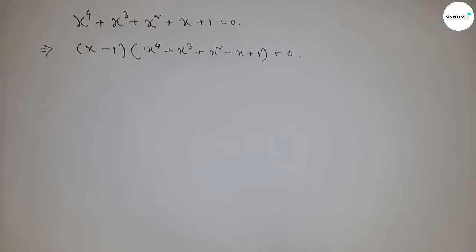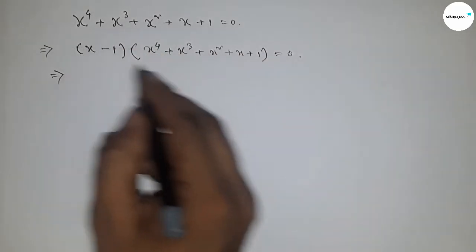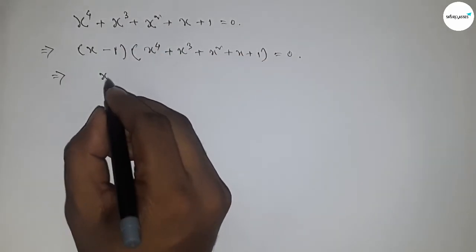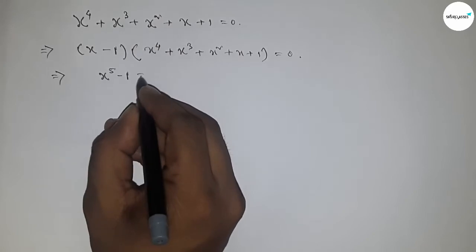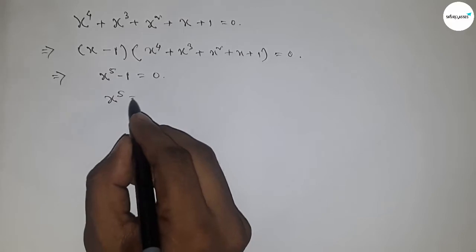This is the expression x⁵ - 1 = 0. So we can write x⁵ - 1, and keep it in mind. From this we can write x